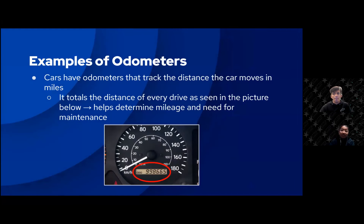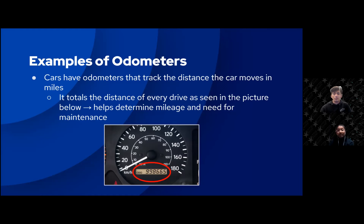Odometers can be found in a lot of places in our daily life, especially in cars. You can see below in the red circle an odometer display, and it's displaying the miles that a car has traveled. By tracking the total distance of every drive, it can help the car owner know the mileage of the car as well as when the car needs maintenance.